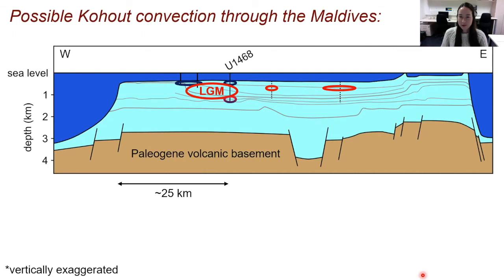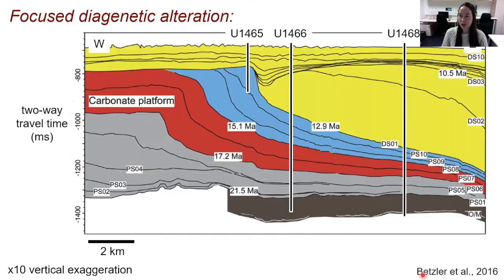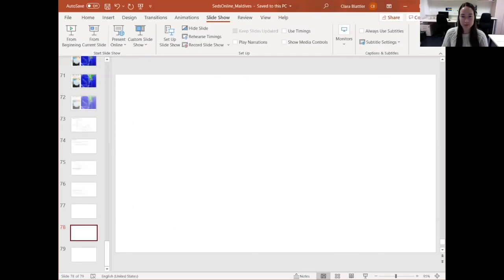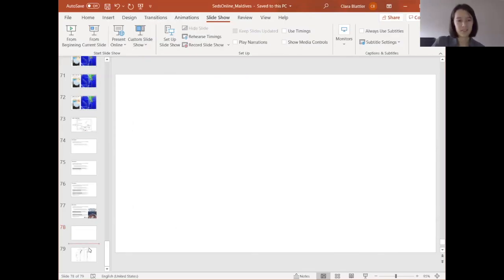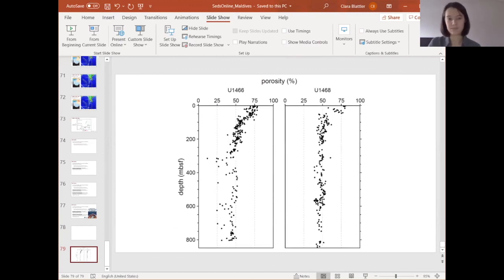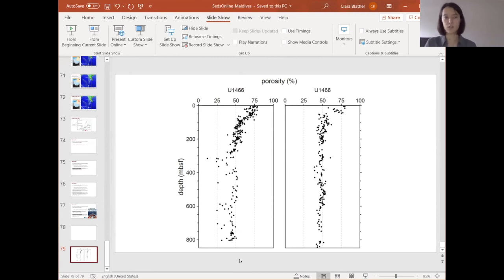On whether porosity is invariant with depth: the porosity data show it decreases from the surface to around 50% and stays there for most of both cores — so pretty steady with depth from about 100 meters downward. That suggests it's not more extensive dissolution associated with deeper Holocene fluids, but rather a pretty steady high porosity throughout.